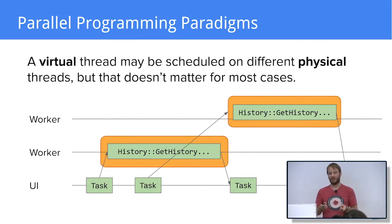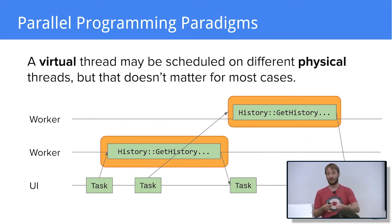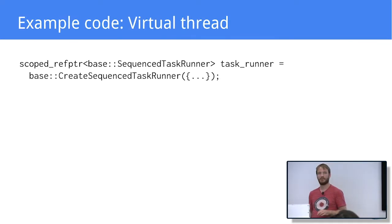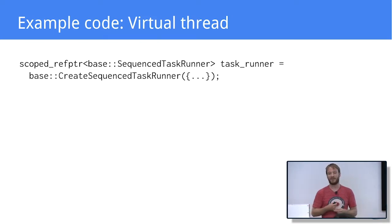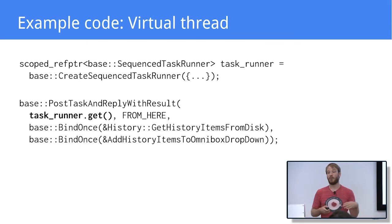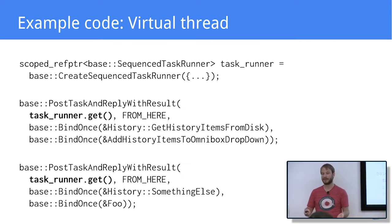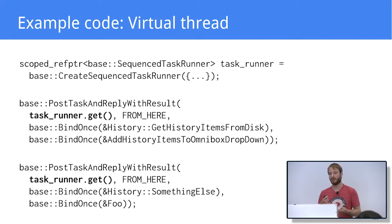What's a virtual thread? Tasks posted to the same virtual thread are not guaranteed to run on the same physical thread. For example, if you get the thread ID from two different tasks running on the same virtual thread, you are not guaranteed to get the same value. But for most cases, that doesn't matter — what matters is that the tasks don't run at the same time. To use a virtual thread, the first thing you do is create a sequence task runner and store it in a variable. When you want to post a task that runs on the virtual thread, you pass that task runner as argument. The two tasks will run on the same virtual thread — not concurrently — and we don't have any data races.